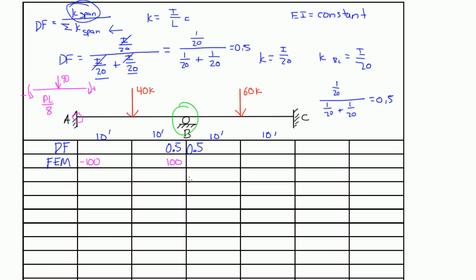For span BC, PL over 8 is 60 times 20 over 8, which gives you negative 150, because it's on the left side of span BC. And on the right side, it's going to be positive 150. PL over 8: 60 times 20 divided by 8 is 150.